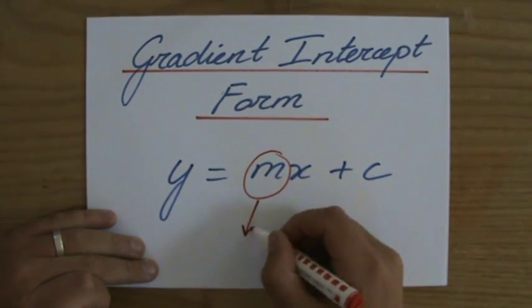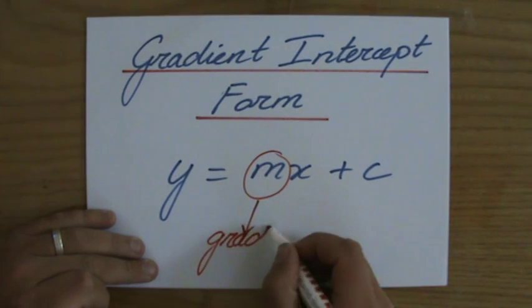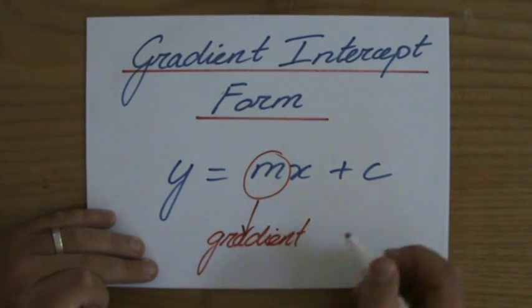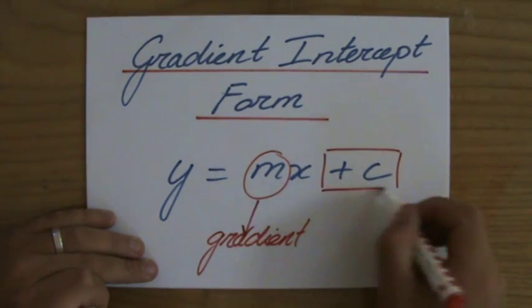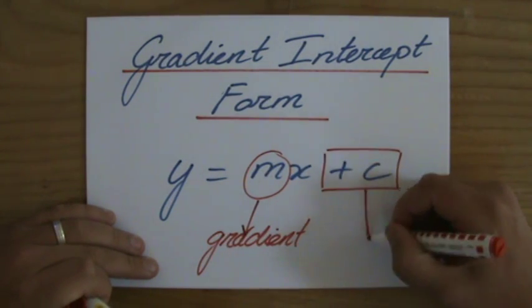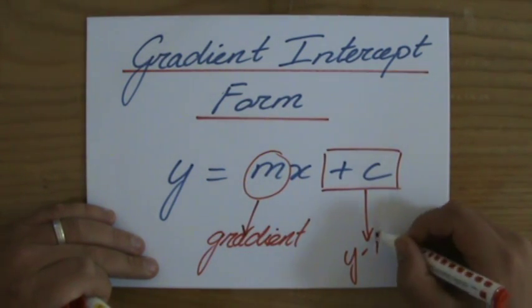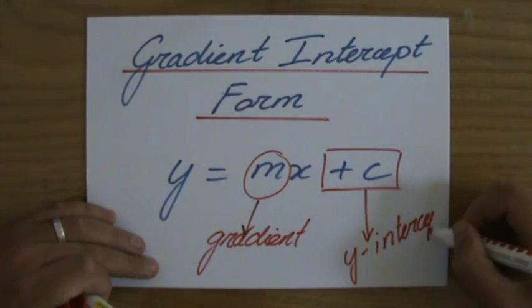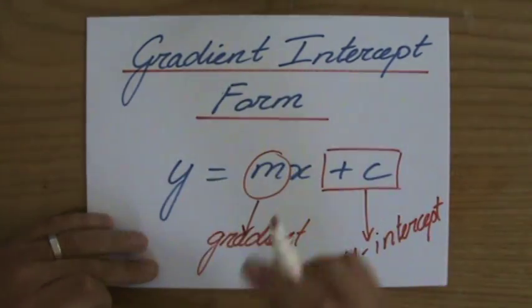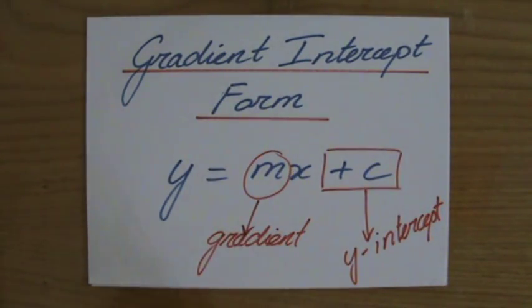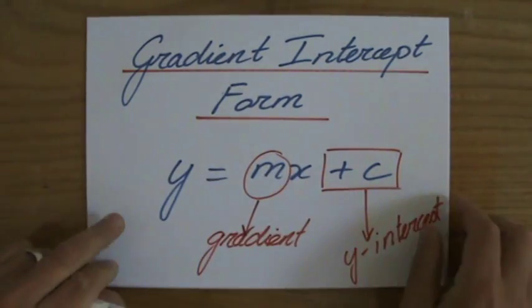That coefficient of your x is the gradient of your line and the steepness of your line. And that number, the c, your constant, is where it goes through the y-axis. So that's your y-intercept. Gradient intercept form. Check one of my previous videos if you're not comfortable with this yet.